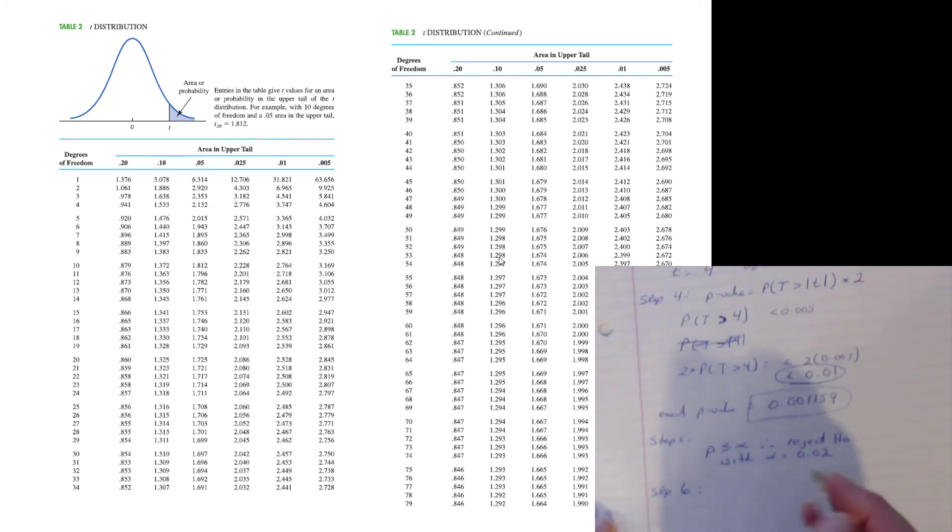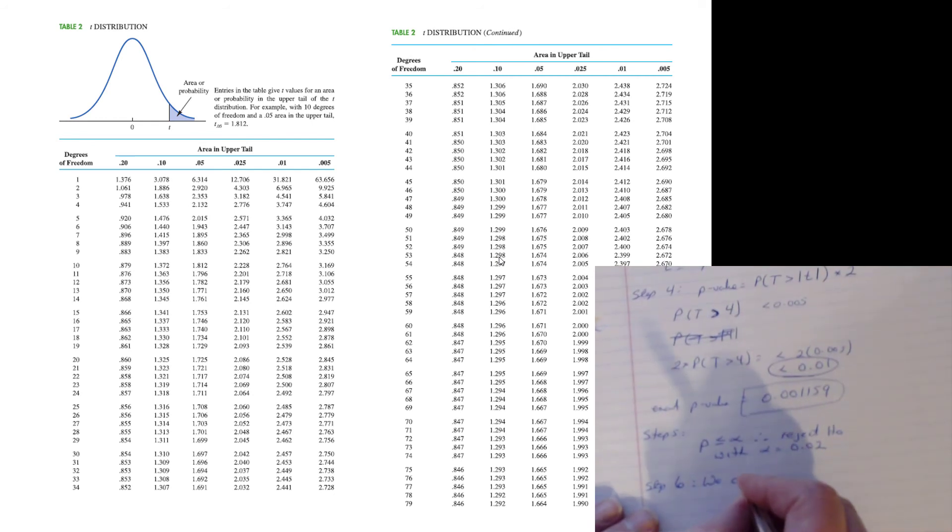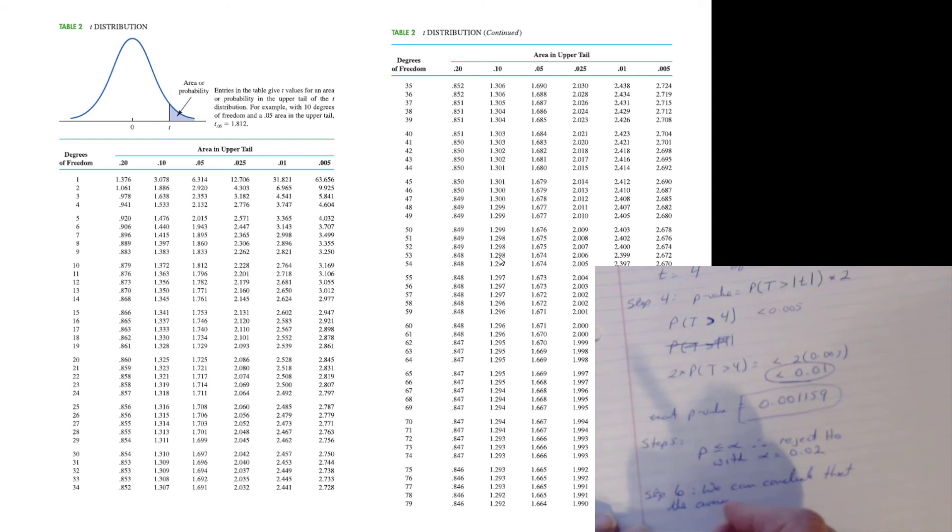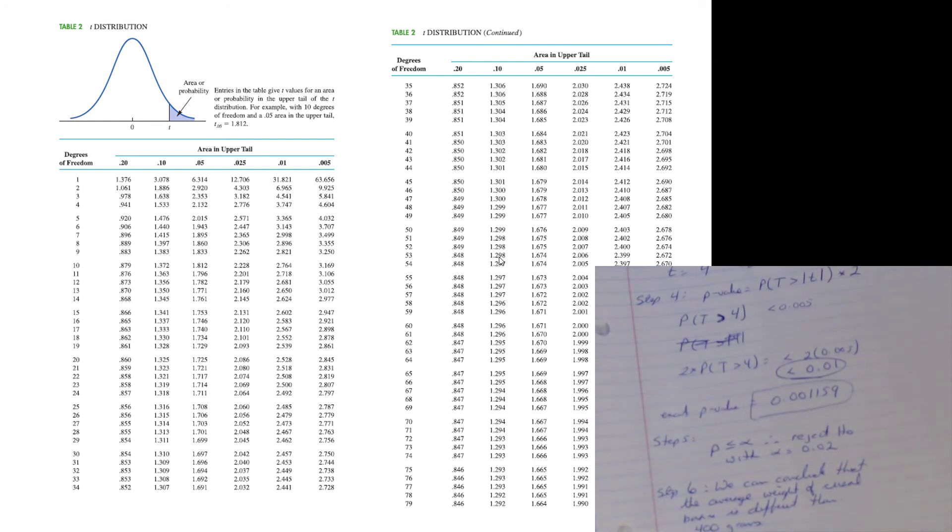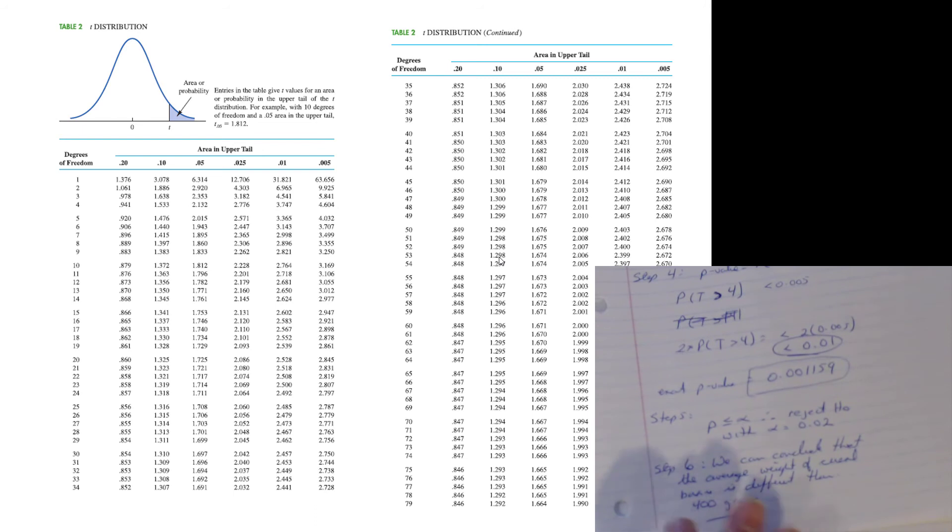Step 6 is what do we conclude? We've rejected H-naught. H-naught is gone, so we can accept HA. Yes, we can conclude that the average weight of the cereal boxes is different than 400 grams. That's problematic for us because now we're not filling it appropriately. Perhaps that tells us we need to do some calibration on our equipment to make sure everything is okay.